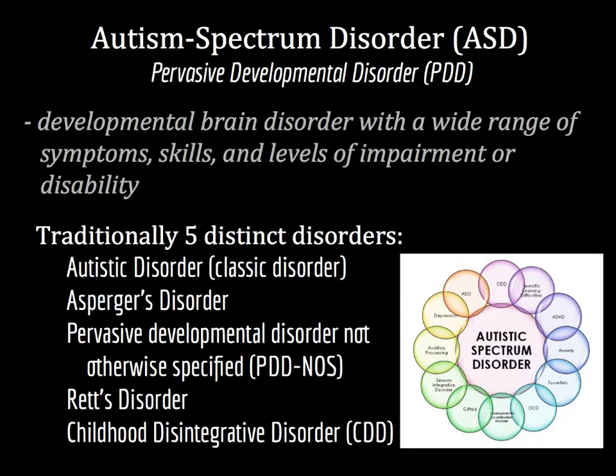Prior to the adoption of the DSM-5, ASD was often categorized as a set of five different disorders. Autistic disorder is the classical broad classification, identifying individuals who are generally slow to hit major developmental milestones, like the acquisition of spoken language.